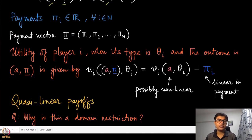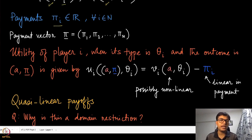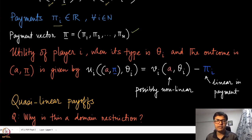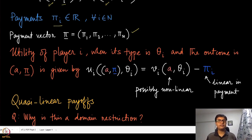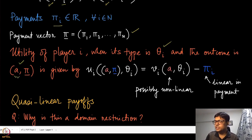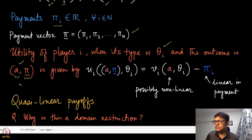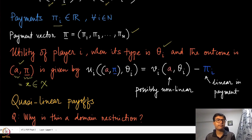Let us now come to the payment part. We have defined pi_i as the payment charged to player i, which lives on the real line, and the payment vector is (pi_1, ..., pi_n). With this payment, the allocation, and the player's type, we can define the complete utility of player i. The allocation and payment together constitute the total outcome — (a, pi) is the same as x that we defined earlier, belonging to script X. Our social choice function outputs this outcome, which is essentially the allocation and the payment decision.